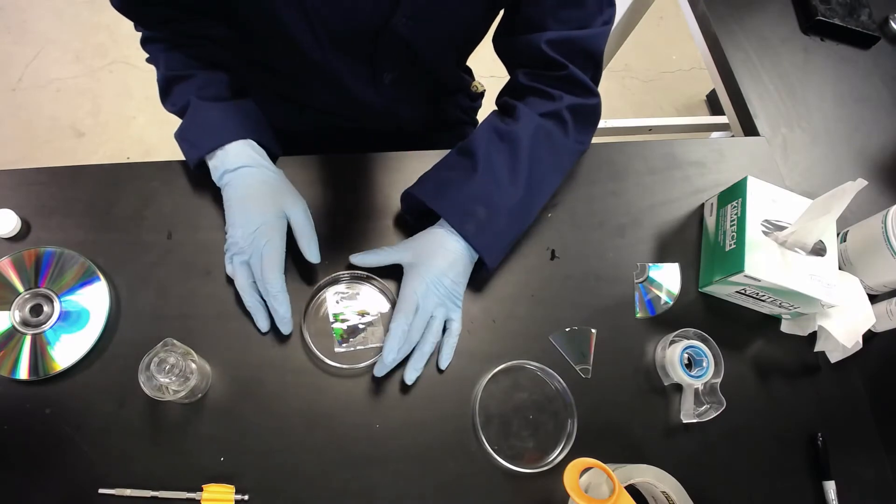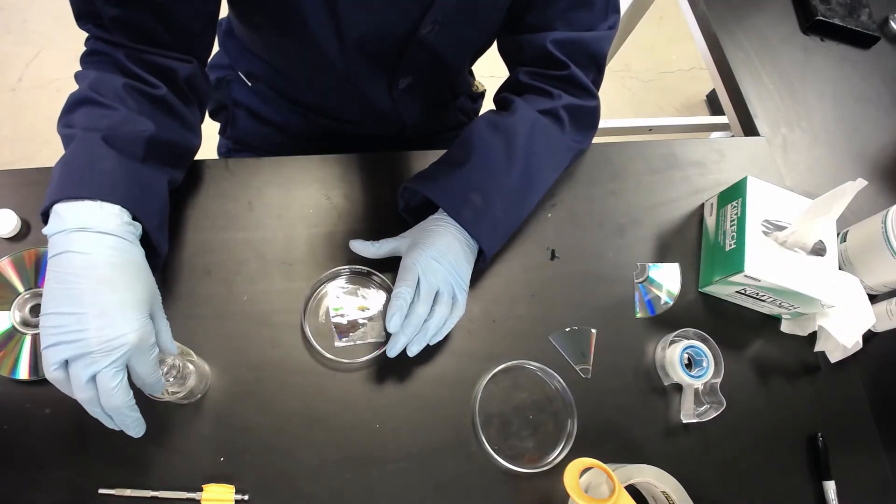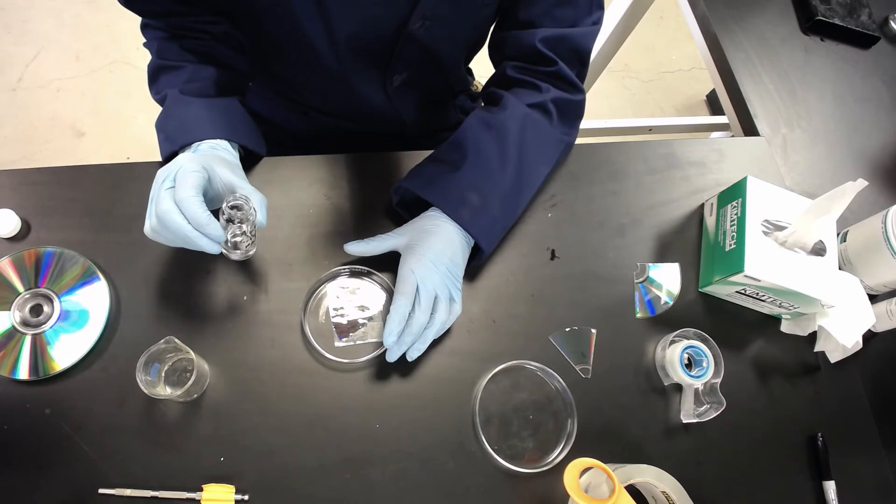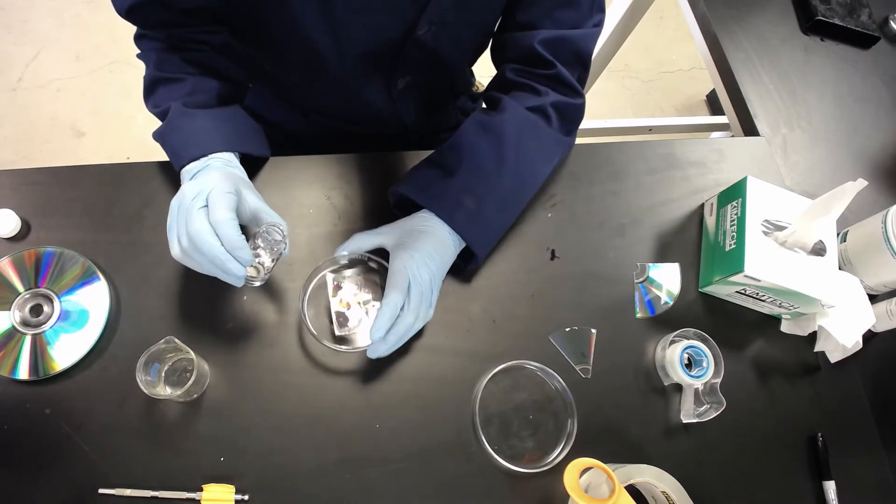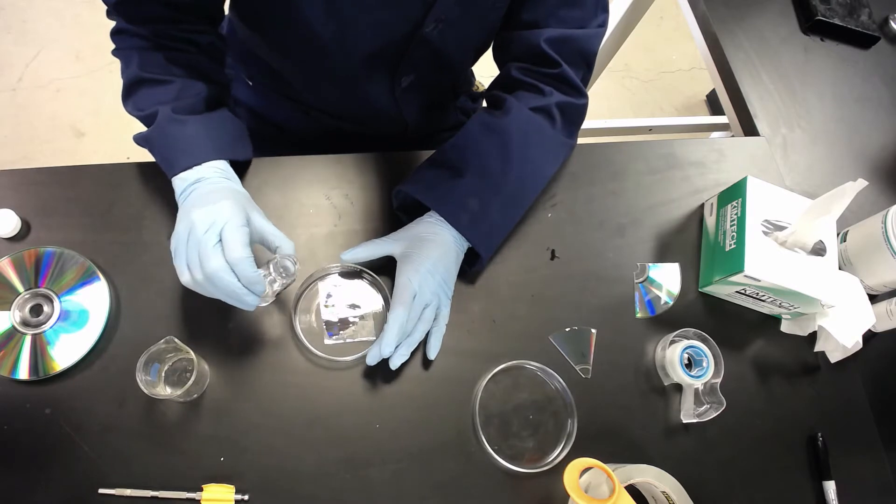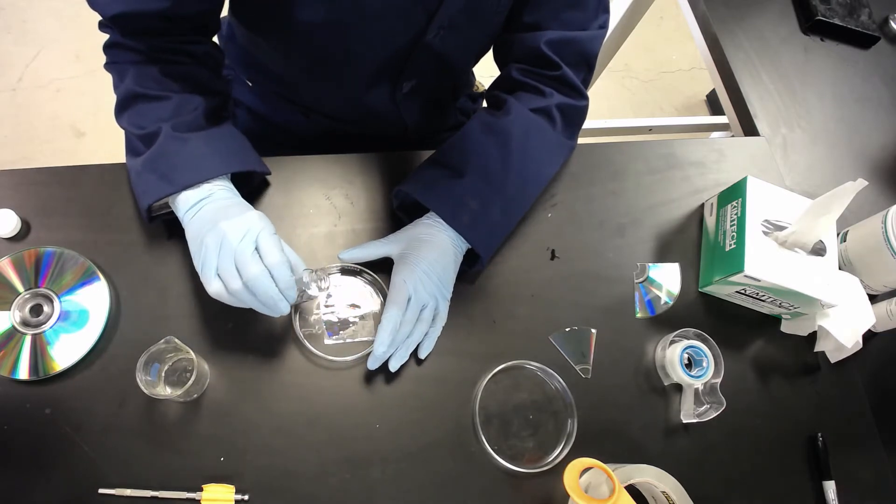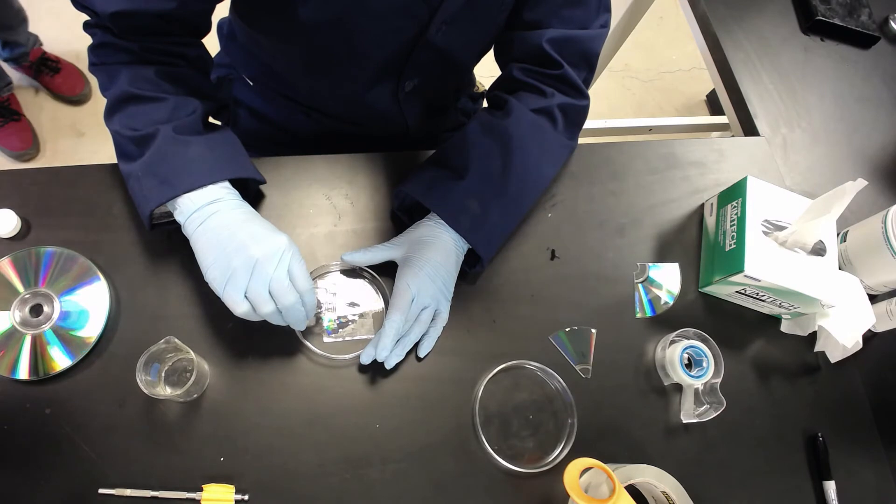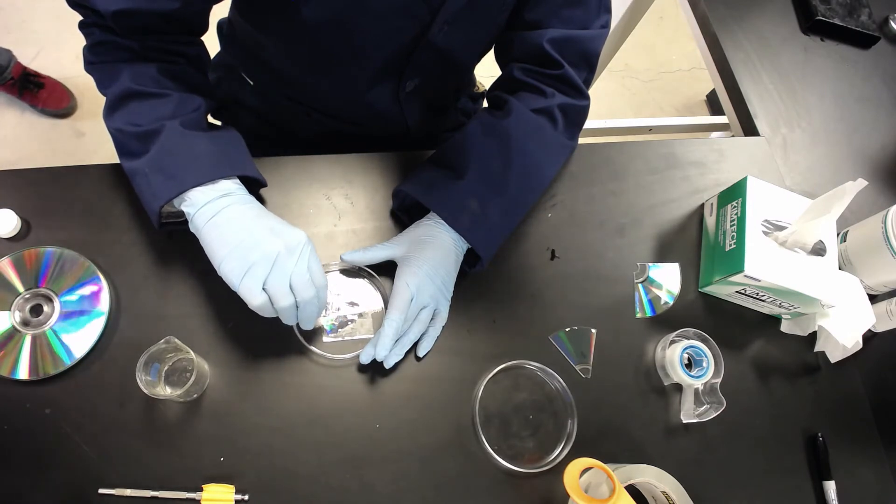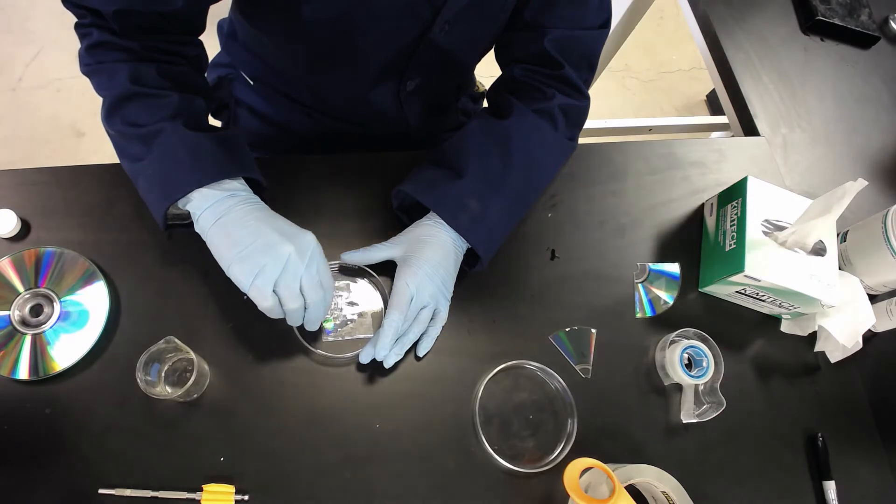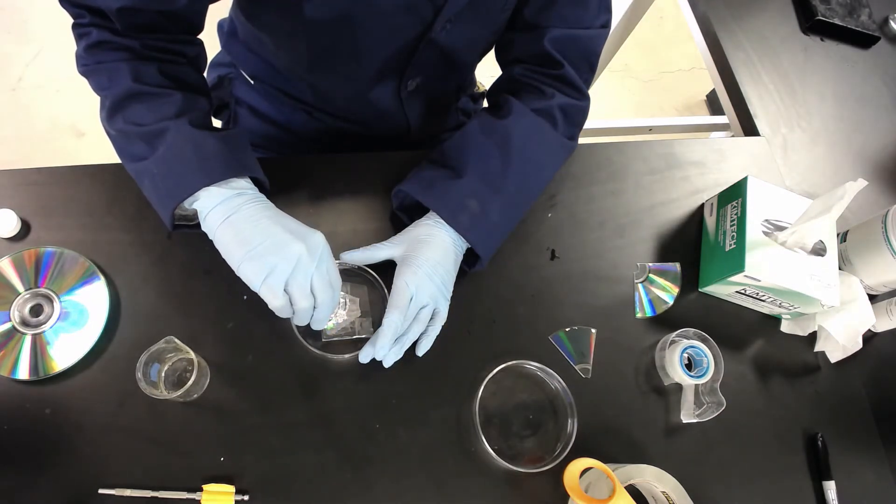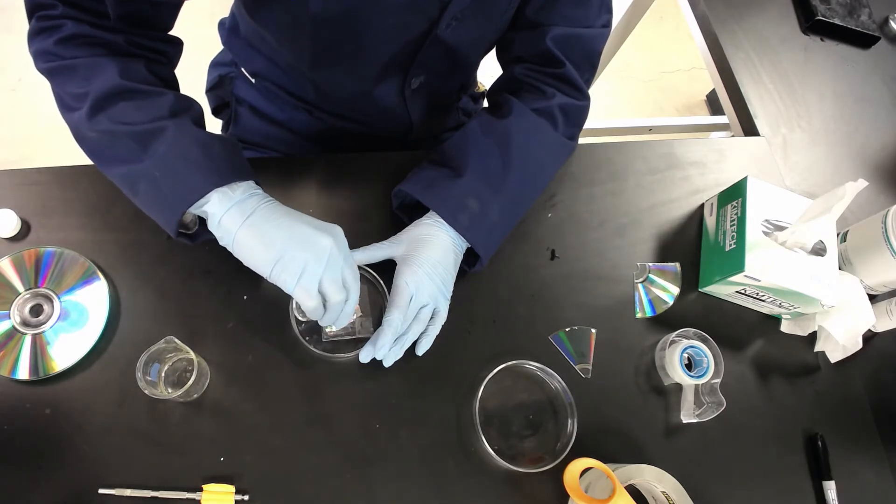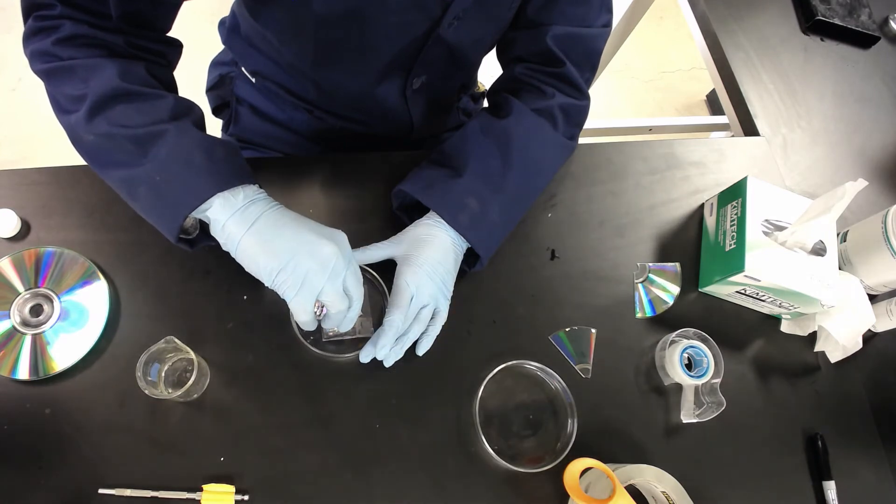Okay, moving right along. We are now going on to the last step here, where we're going to take our PDMS that we just took out of the vac oven and we're going to pour it into our master. We're going to do our best to minimize bubbles, so I'm going to pour it all in one go. Here it comes.